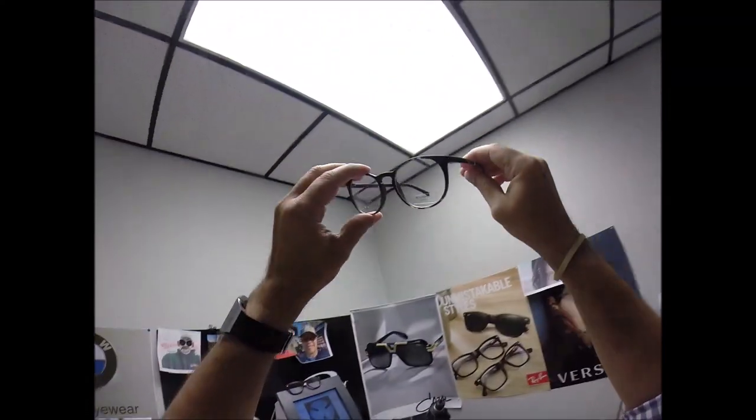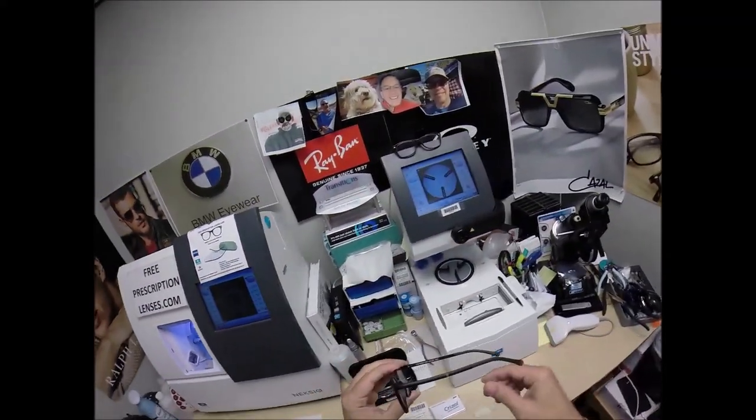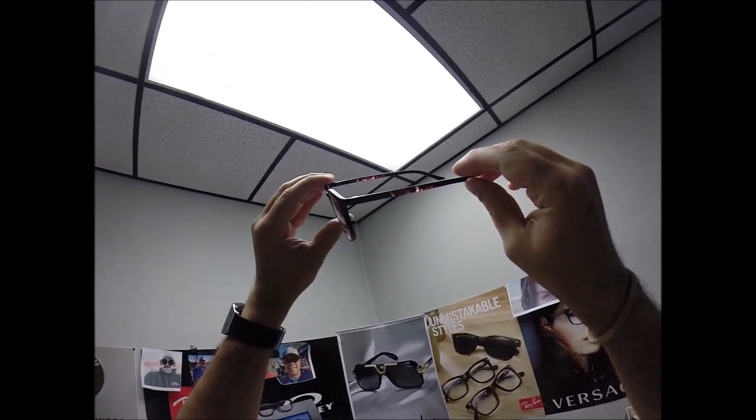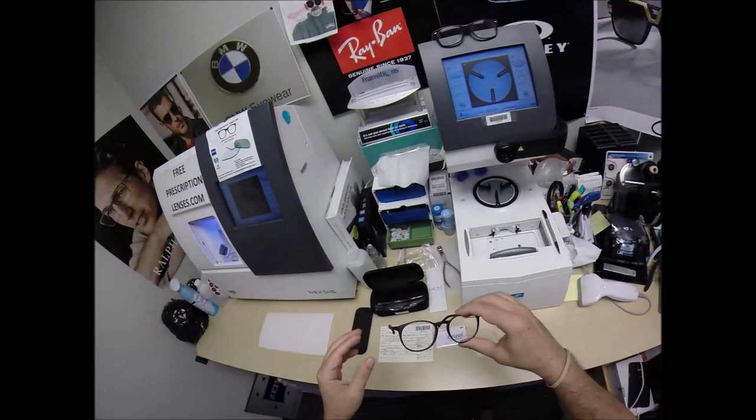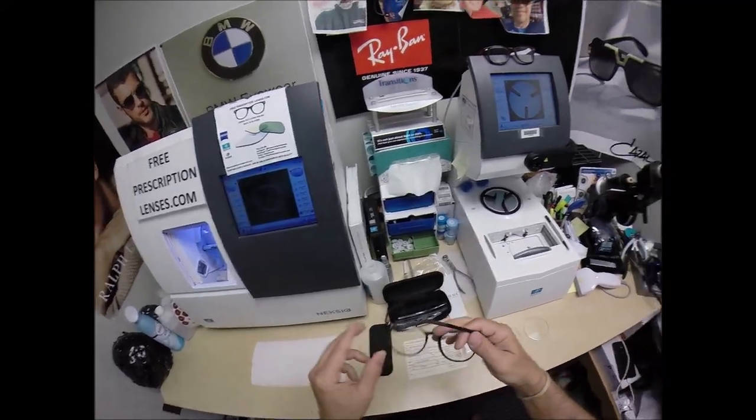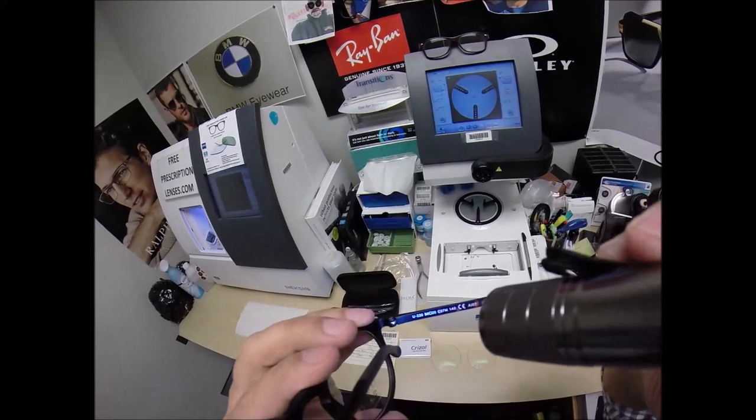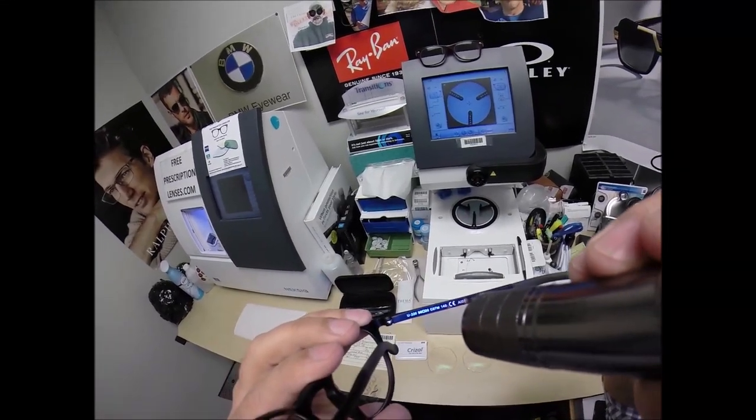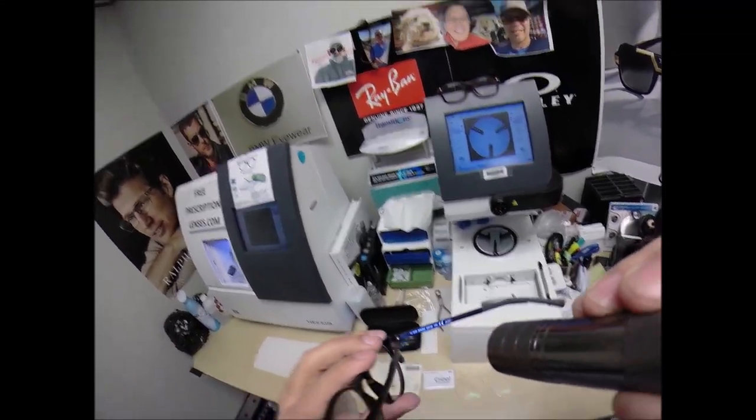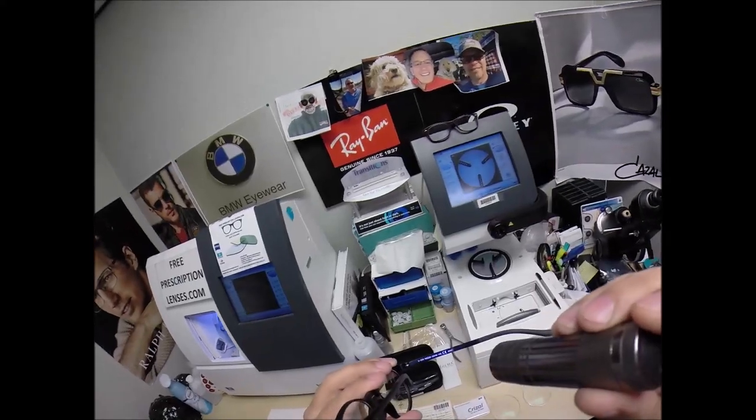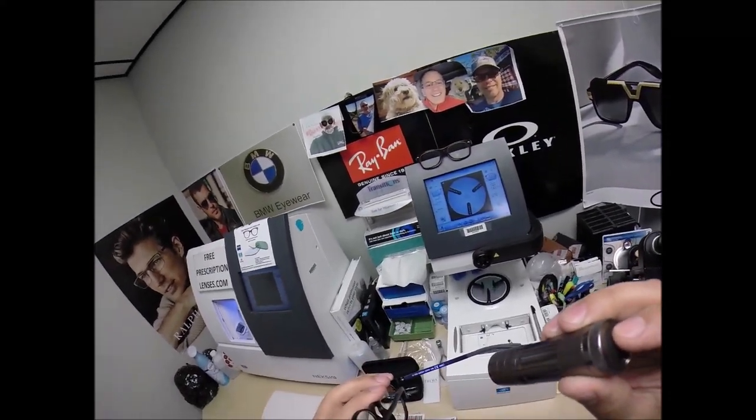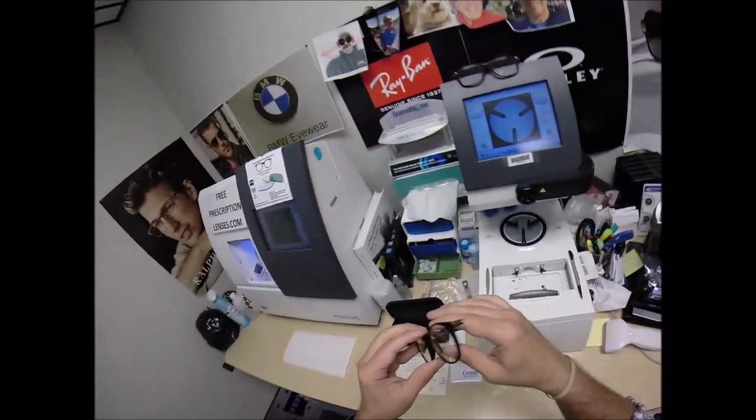But this is the Ultem 220 color 7. This is a tortoise color. That's why I was holding it up to the light so you could see the tortoise aspects of it. I don't know if my camera is good enough to pick that up. But this is the Ultem 220 size 50 with a 20 bridge color 07, which is the 7M, which is the tortoise. There's also a color 2, and it's a 140 temple length.